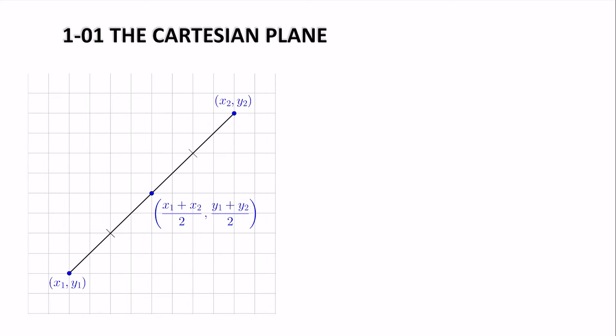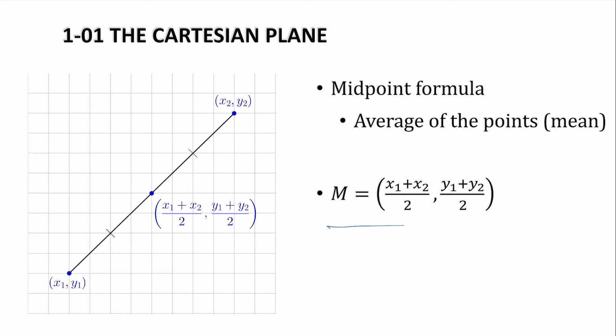We can also find the middle between two points, called the midpoint, which is just the average or the mean. So we're just going to take the two coordinates, add them together, and divide by the number of coordinates, which is 2. So add them together and divide by 2. Which is another formula to memorize.